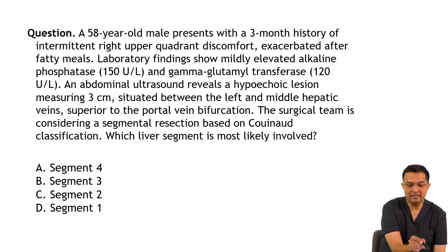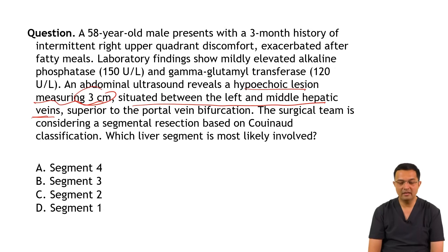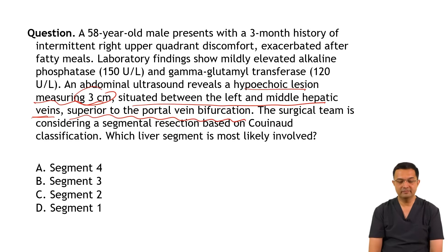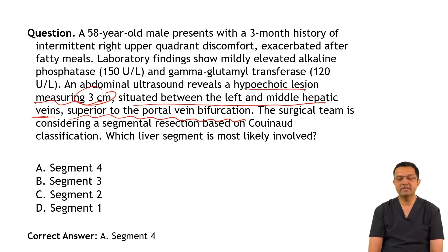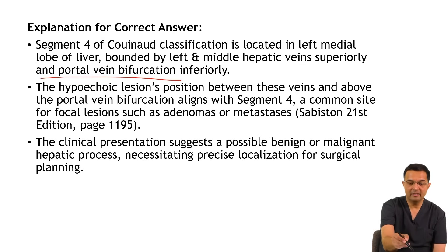Let us look at the information provided. There is a hypoechoic lesion measuring 3 cm situated between the left and middle hepatic veins, and it is superior to the portal vein bifurcation. The right answer here is Segment 4. Segment 4 of Couinaud's classification is located in the left medial lobe of the liver, bounded by the left and middle hepatic veins superiorly and the portal vein bifurcation inferiorly.